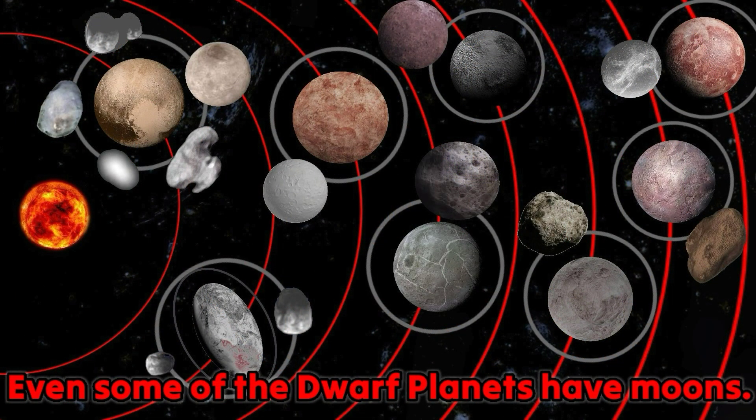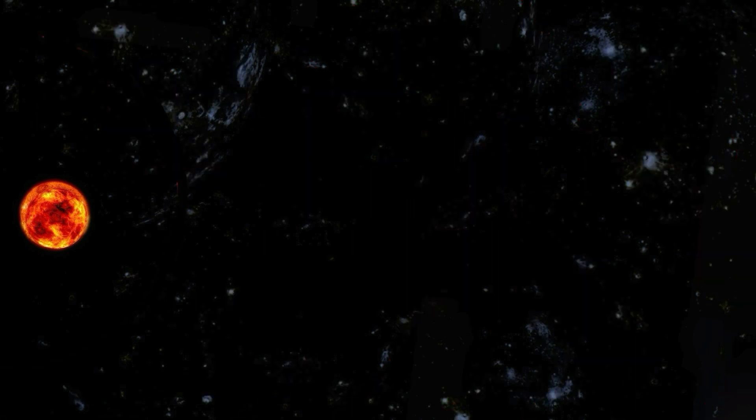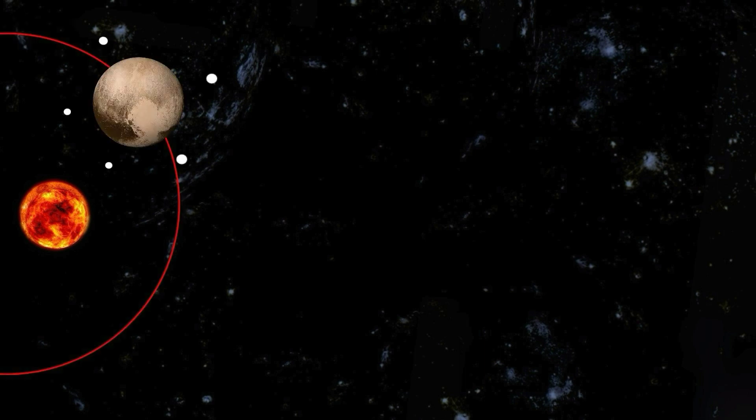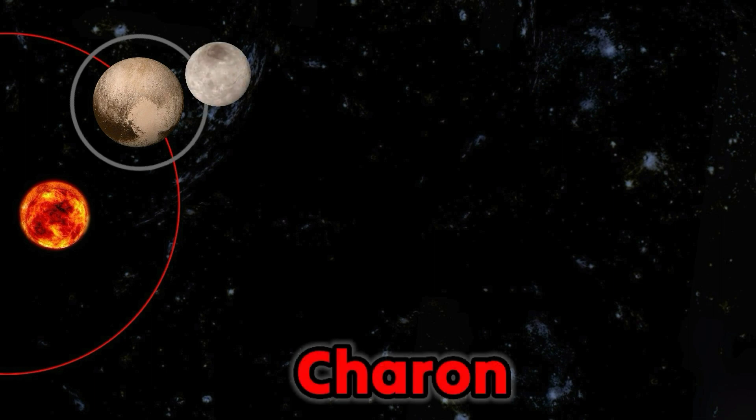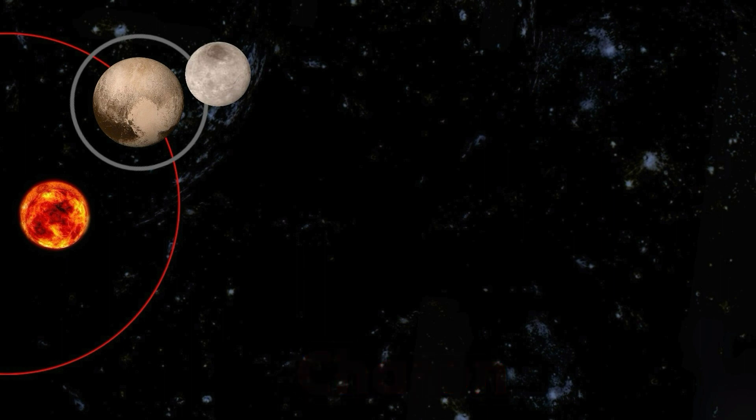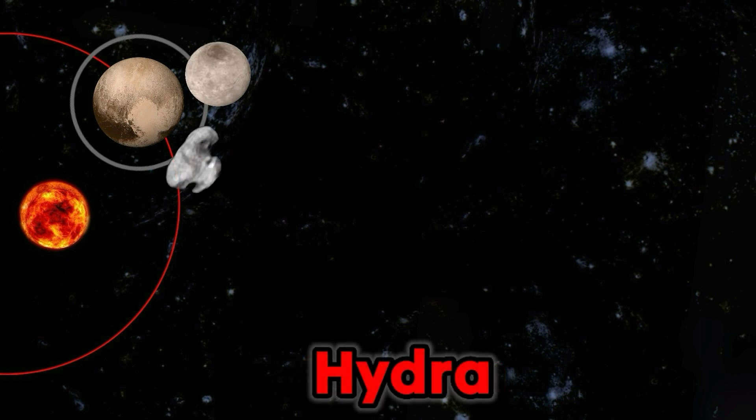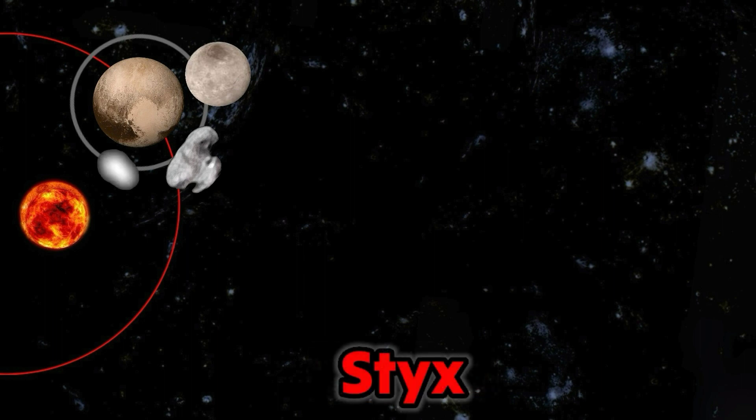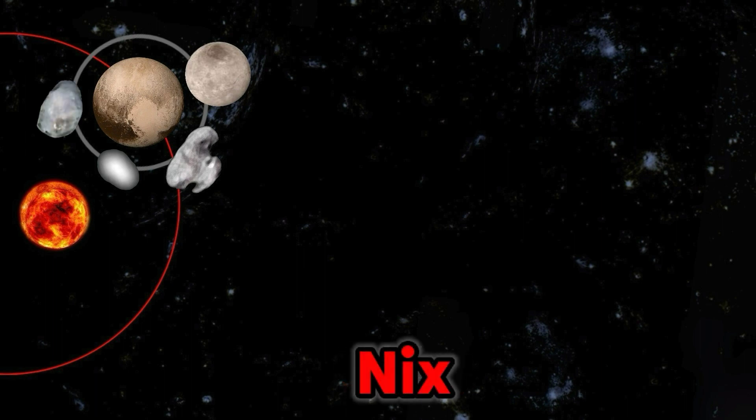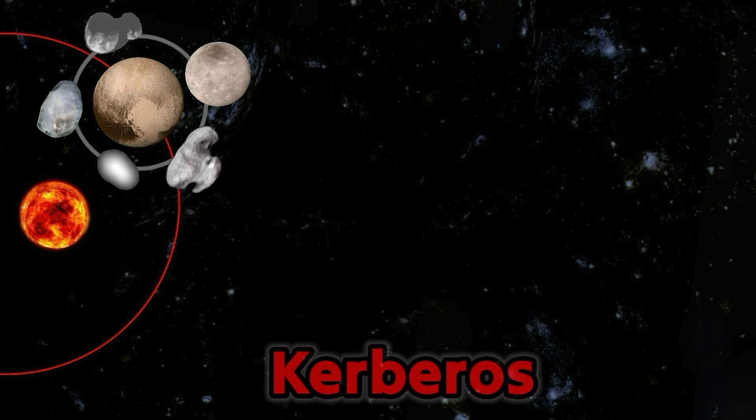Even the dwarf planets have moons. Pluto has 5 moons: Charon, Hydra, Styx, Nix.